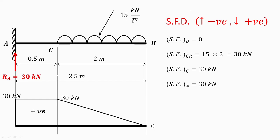The UDL is 15 kilonewton per meter, so for one meter length the UDL acting is 15 kilonewton, and for two meter length it will be 15 into 2, which is 30 kilonewton. That is the shear force just at the right of C. Exactly at C there is no other force acting, so the shear force at C is 30 kilonewton. Between C and A there is no other force, so the same shear force acts at point A also.